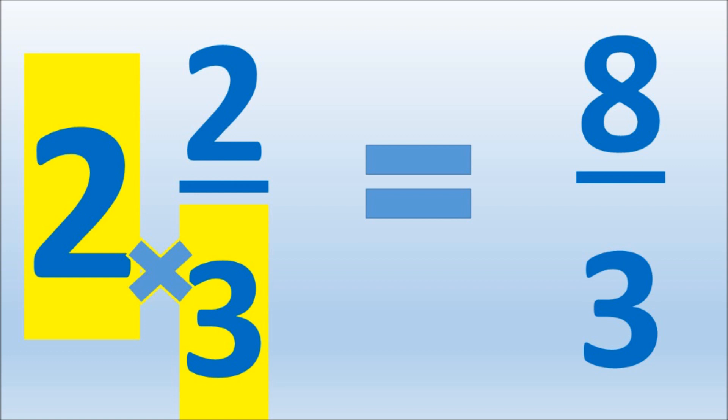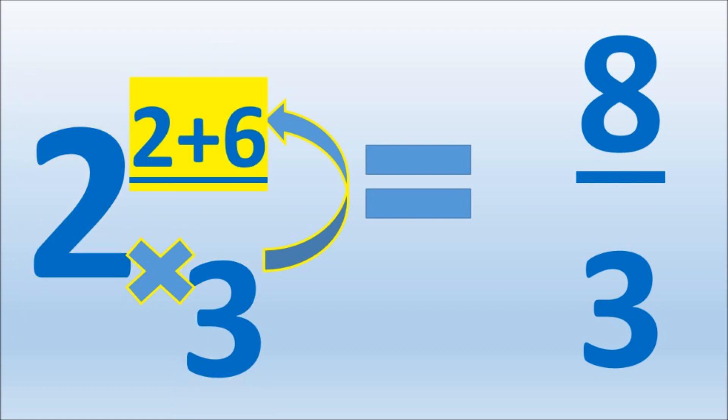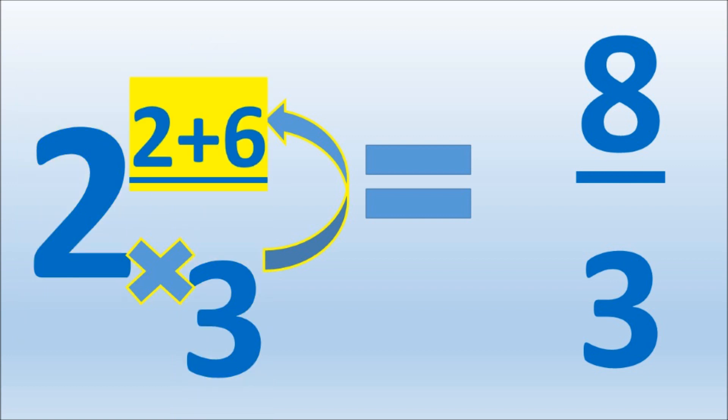Multiply the whole number into the denominator. 2 times 3 is 6, and we add that into the numerator. So 6 plus 2 equals 8.